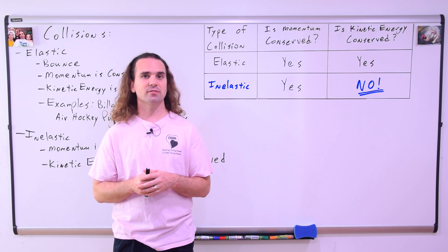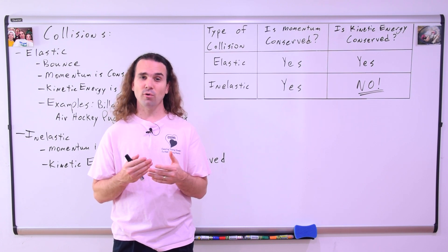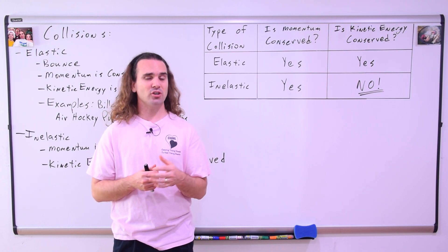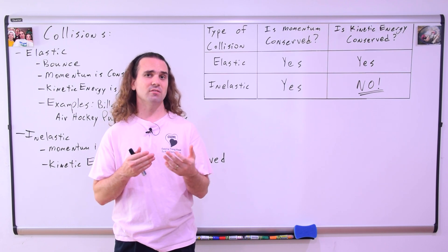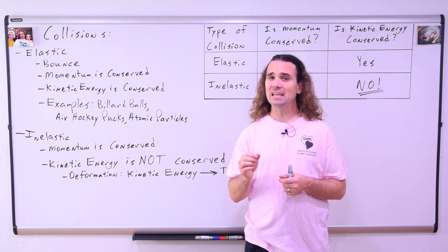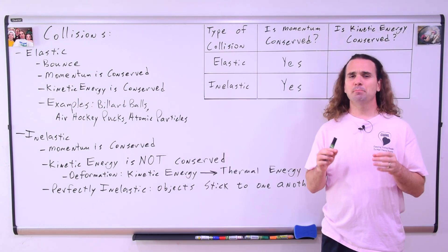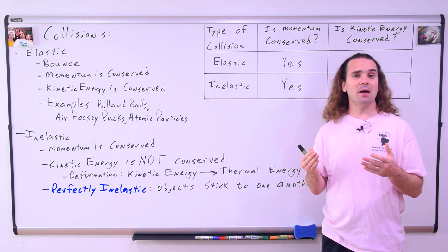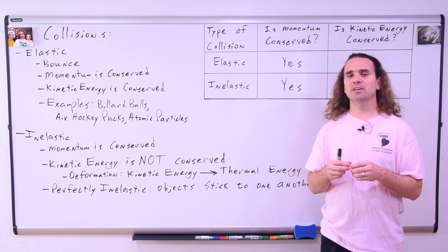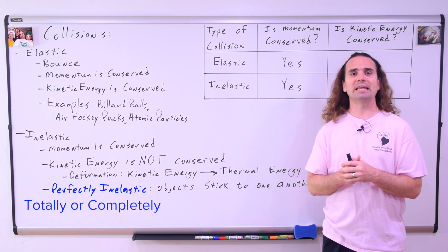The reason kinetic energy is not conserved during inelastic collisions is because during inelastic collisions, the objects deform and that change in shape of the object heats up the object. In other words, the deformation of the object causes the kinetic energy to be converted into thermal energy. I will point out that there is also a specific type of inelastic collision, which is called a perfectly inelastic collision. A perfectly inelastic collision is where the objects run into and stick to one another. Sometimes you'll also hear a perfectly inelastic collision referred to as a totally or a completely inelastic collision. However, I prefer the term perfectly inelastic collision.